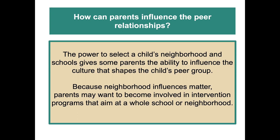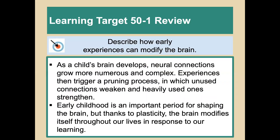Learning target one: describe how early experiences can modify the brain. As a child's brain develops, neural connections grow more numerous and complex. Experiences then trigger a pruning process — unused connections are weakened and heavily used connections are strengthened. Early childhood is a very important period for shaping the brain.